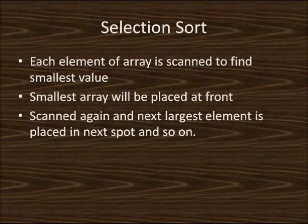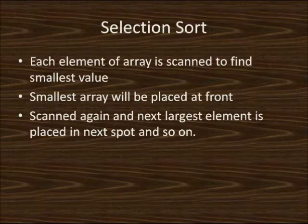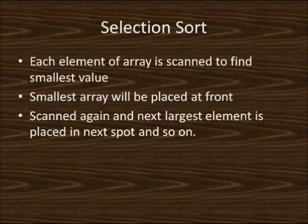Selection sort is a special type of sorting method in which each element of an array is scanned to find the next smallest value. The smallest value of the array is placed at the front. Next, the array is scanned again for the next largest element, which is then placed in the next spot in the array. The element that is sorted and the element in that sorted spot are swapped. This process continues for the entirety of the array.